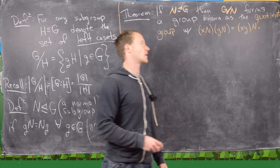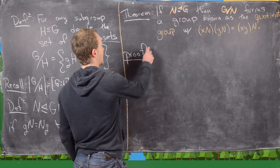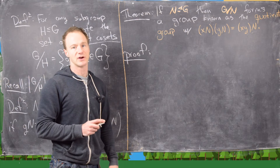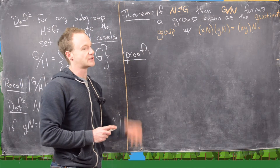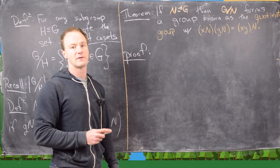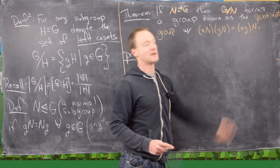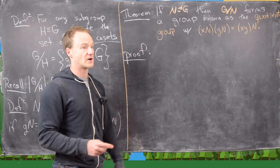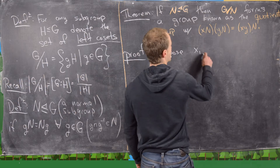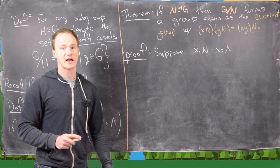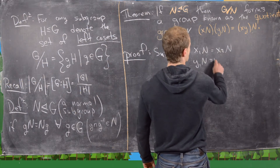We're going to look at the proof, and what's really important is showing that this operation is well defined — that's the first thing we have to do. We need to do that because cosets may have different representatives; cosets can be equal while having different representatives. The normality of the group is what makes this operation well defined. Remember, this has to be a binary operation, and a binary operation is a function, so it must be well defined. Suppose x₁N = x₂N — two different coset representatives for the same coset — and also y₁N = y₂N.